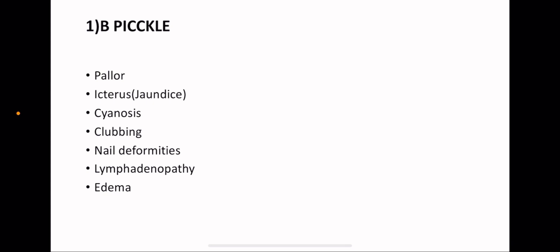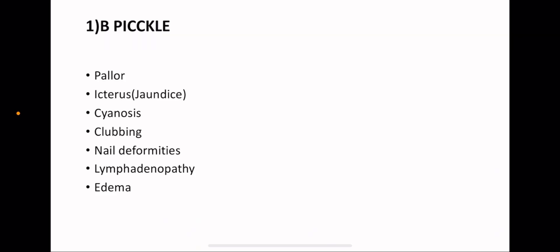For 1B, you just check for PICKLEBCK. P for pallor, I for icterus or jaundice, C for cyanosis, and the next C for clubbing, K for koilonychia which is one of the nail deformities, L for lymphadenopathy, and E for edema. After that, you take the related systems.